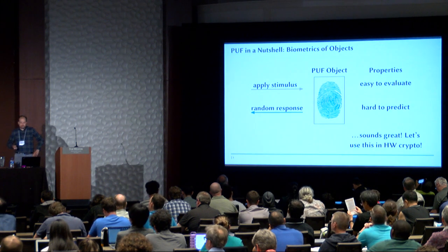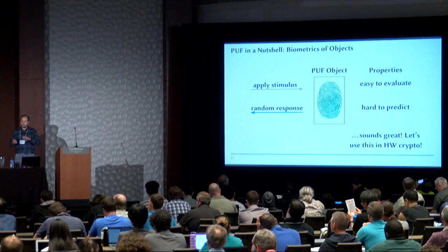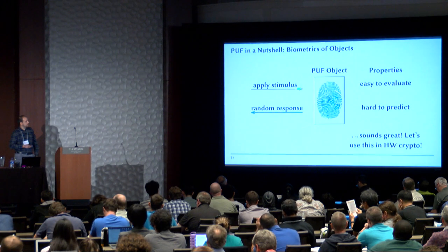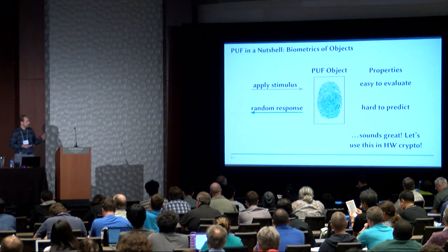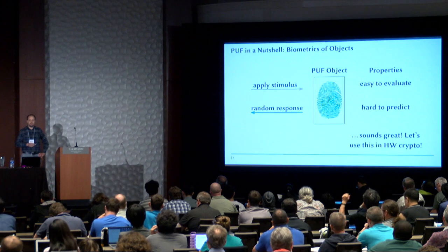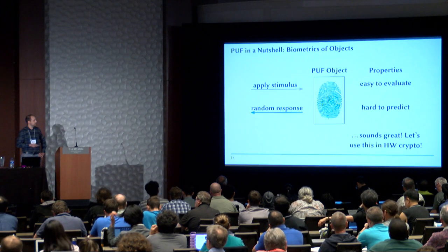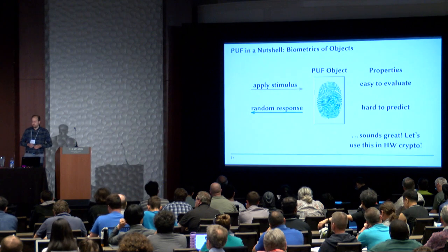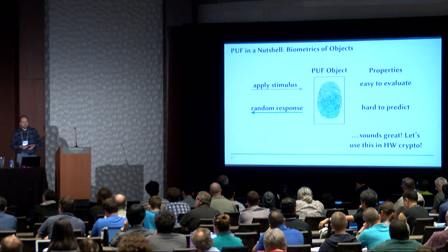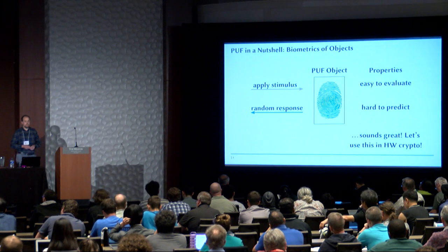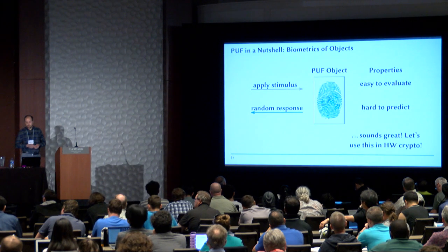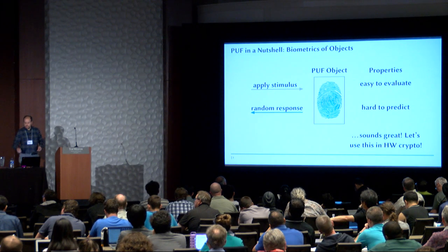What is a PUF? You heard that before in the previous talk, but here we will be having a slightly different perspective. We have a stimulus applied to a PUF object, which is somewhat random due to random manufacturing variations, and out of that we get a response. We have two easy properties: it needs to be easy to evaluate and hard to predict. This sounds like a great thing to have in hardware crypto.